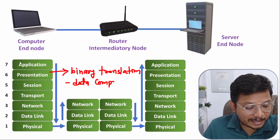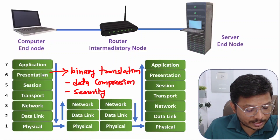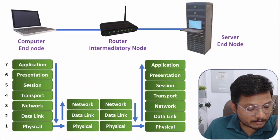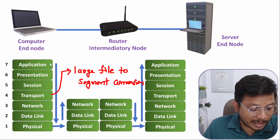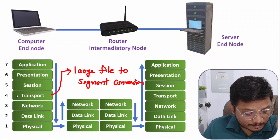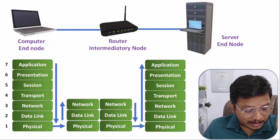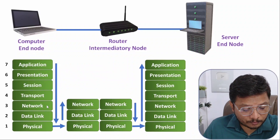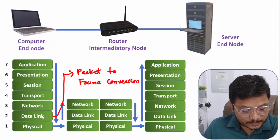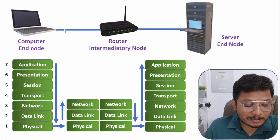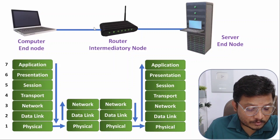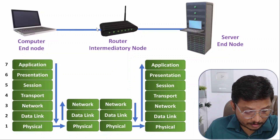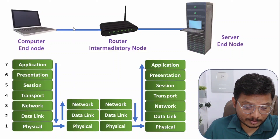Data gets translated layer by layer: from application to presentation, data is converted to binary with compression and security applied. It then goes to the session layer for session management. After that it goes to the transport layer where segmentation happens — large files are broken into segments. From the transport layer, data goes to the network layer where segments are converted into packets. From the network layer, data goes to the data link layer where packets become frames, and those frames go to the physical layer — which may use ethernet cable, optical cable, or Wi-Fi — to transmit signals.